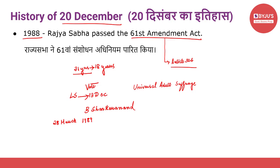It received the presidential assent on 28th March 1989 by the then President R. Venkataraman. From that day onwards, any citizen who has attained 18 years of age and is otherwise qualified can take part in the democratic voting process in India. So the key point to remember is that the 61st Constitutional Amendment Act reduced the voting age to 18 years.